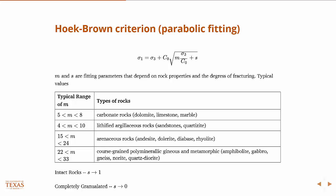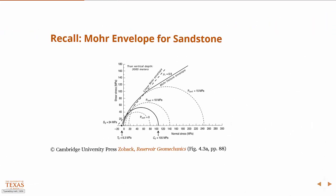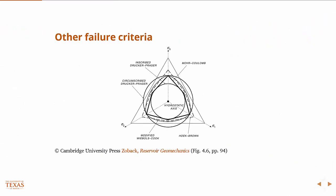So, the Hoek-Brown criterion, again, like if we go back to this figure, it still is mostly hexagonal.